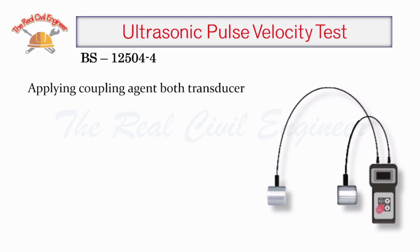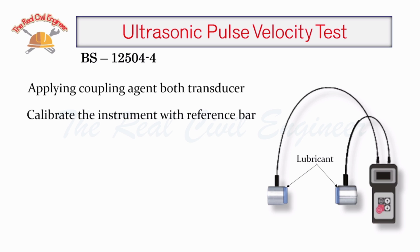Apply coupling agent to both ends of the transducer. Calibrate the instrument with the reference bar before the test. Press the transducer against the reference bar until a stable transit time is displayed.